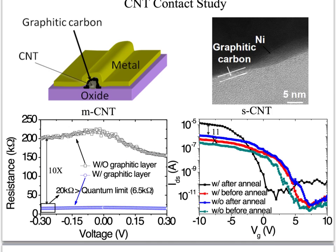The third challenge is to make low-resistance electrical contacts to nanotubes. We propose sandwiching an amorphous carbon layer between the metal and the carbon nanotube interface — about 2 nanometers of amorphous carbon followed by nickel. Nickel acts as a catalyst and the system is annealed in hydrogen to graphitize the amorphous carbon layer. Once the graphitic carbon is formed, it makes good electrical contact to the nanotubes. For metallic CNTs we see a 10x reduction in contact resistance, achieving 20 kilo-ohms compared to the quantum limit of 6.5 kilo-ohms. For semiconducting tubes we see an 11x increase in on-current.